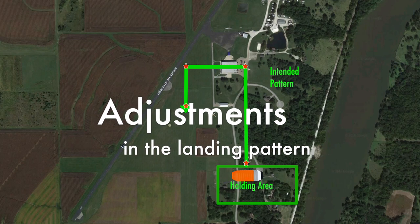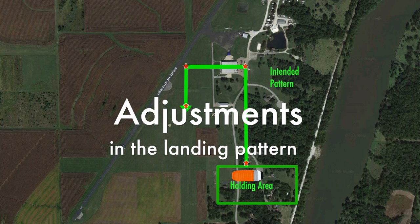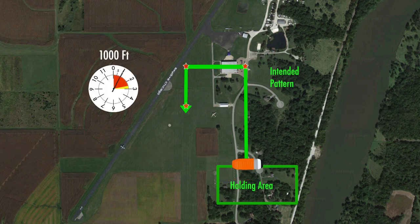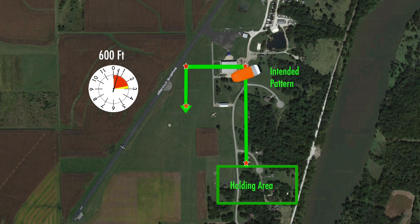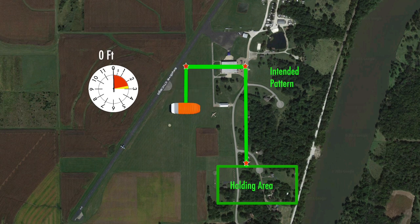In this video, we'll talk about making adjustments to your pattern when things don't turn out exactly as planned. If all is well, fly your pattern as planned, turning at the locations and altitudes — we'll call these pattern points — you laid out for yourself before you boarded the plane, keeping an eye out for others and avoiding any erratic turns.